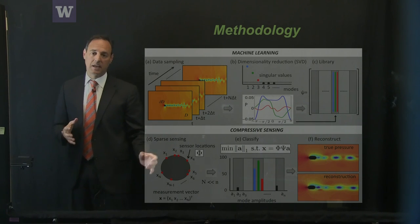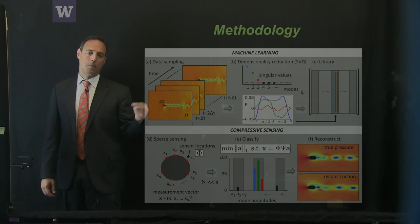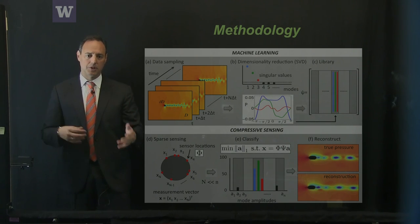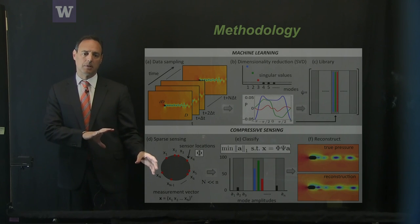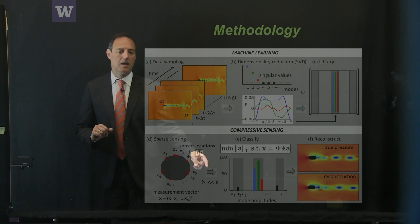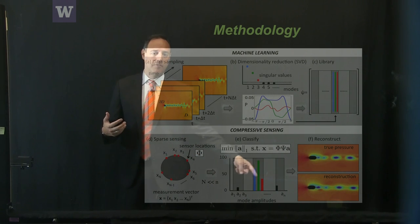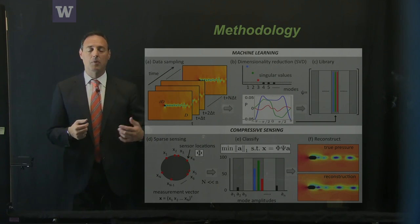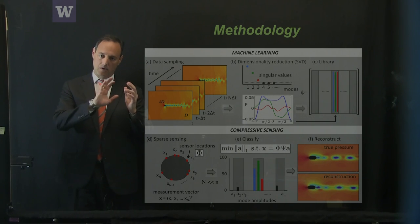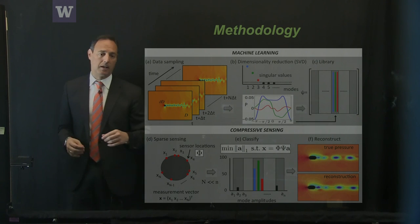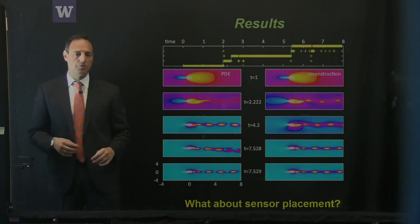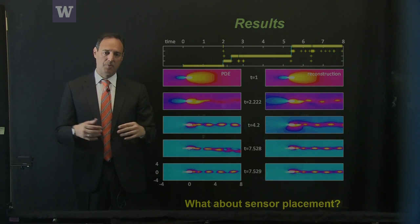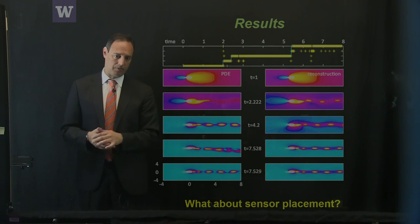Unlike typical compressive sensing using random projections, here we use point measurements — more physically realistic around flow around the cylinder. We take these measurements, solve the Ax=b problem, and only a few coefficients activate, since the fluid should generically be in only one dynamical regime. We can look at the modes that come on to identify the Reynolds number and reconstruct the dynamics. As the Reynolds number is increased, we do a very good job at accurately predicting it and reconstructing the full fluid flow.